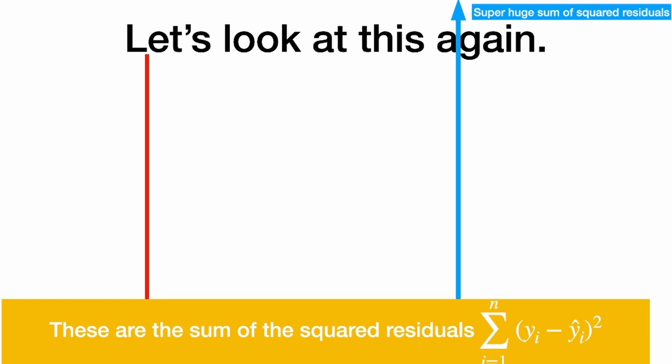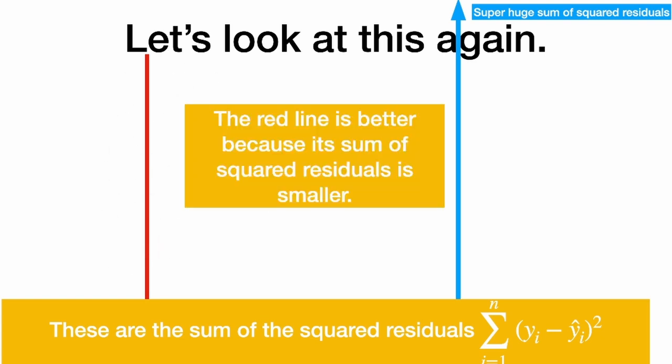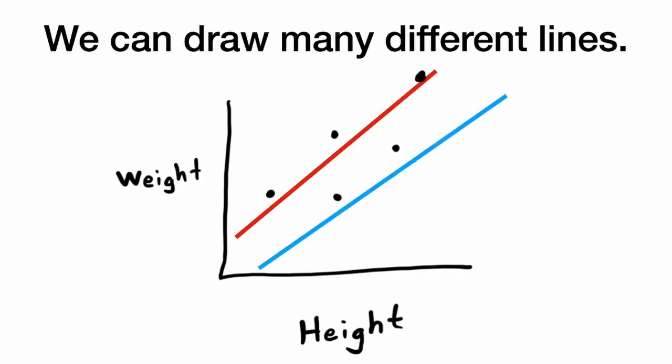These are the sum of the squared residuals. For each data point from one through n, we add up the squared residual. And this red line gave us a better sum of squared residuals. The red line is better because its sum of the squared residuals is smaller.